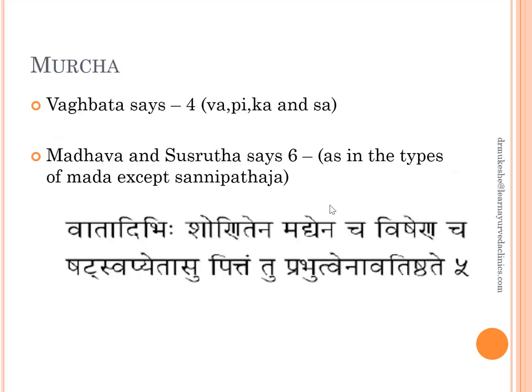Next is Moorcha. Vagbhata says 4 types of Moorcha: Vata, Pitta, Kapha and Sannipata. However, Madhava and Sushruta have classified Moorcha into 6, just like Vagbhata classified Mada into 7. That is why — 'Vata Adhibhi Shonitena Madhyena Vishayena Cha, Shatswabhiyedasu Pittaamtu Prabhutvenaavadishtate' — Sushruta says that in these 6 Moorchas, Pitta is the predominant Dosha.